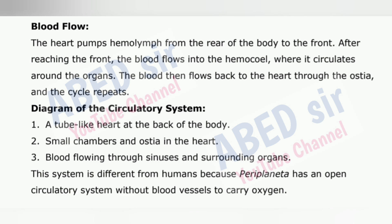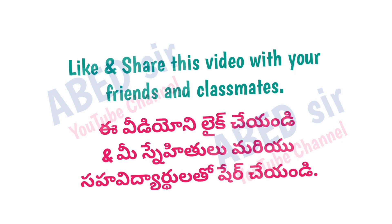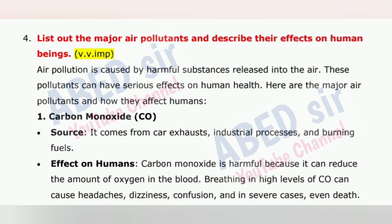Next important question is 4: List out the major air pollutants and describe their effects on human beings. Air pollution is caused by harmful substances released into the air. These pollutants can have serious effects on human health. Here are the major air pollutants and how they affect humans. 1. Carbon monoxide (CO): Source — it comes from car exhausts, industrial processes and burning fuels. Effect on humans: Carbon monoxide is harmful because it can reduce the amount of oxygen in the blood. Breathing in high levels of CO can cause headaches, dizziness, confusion, and in severe cases even death.